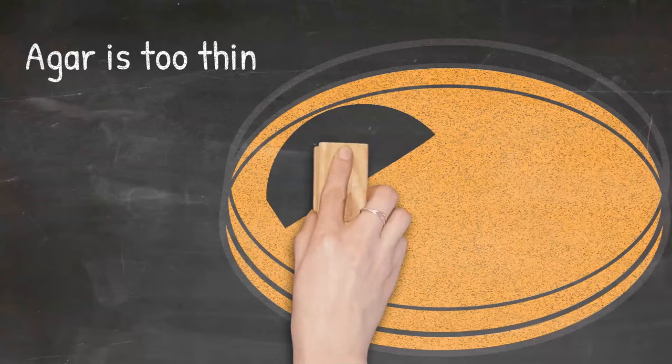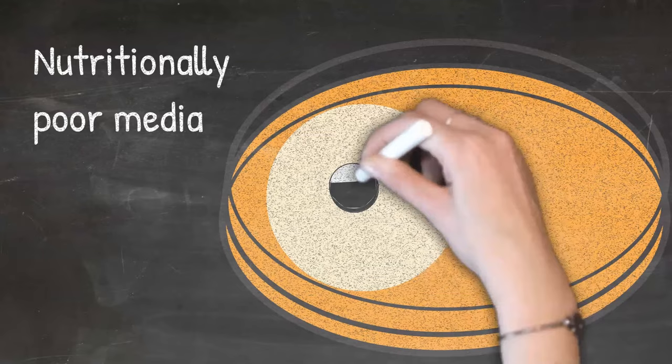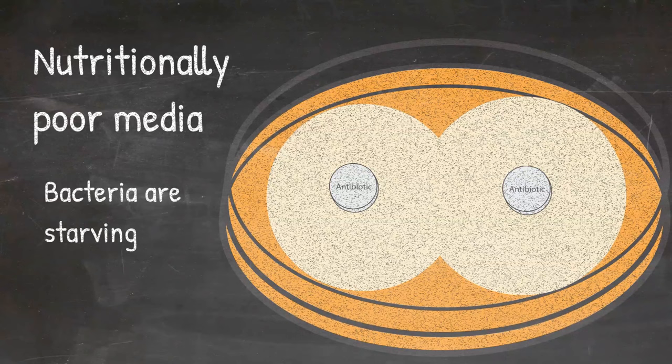When the agar is too thin, the antibiotic spreads more laterally, which leads to a larger zone of inhibition. If the media is nutritionally poor, the bacteria is not at its optimal growth condition. Growth rate decreases, so larger zone inhibition is observed.